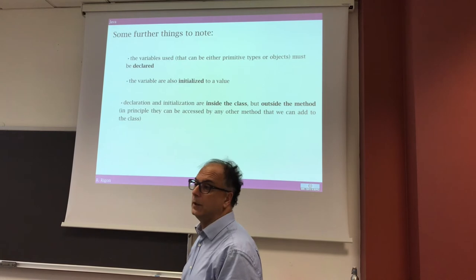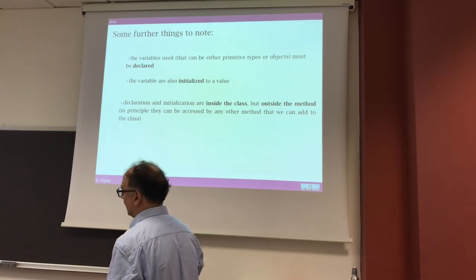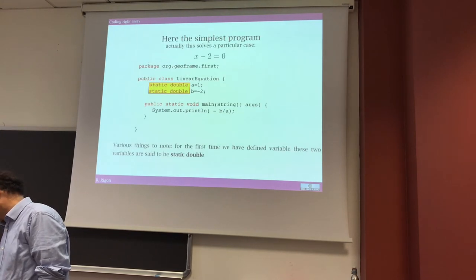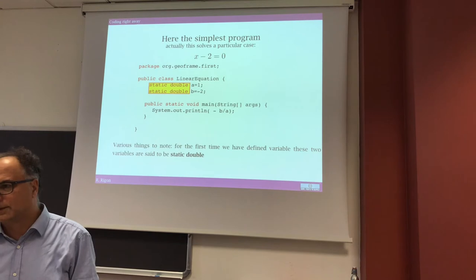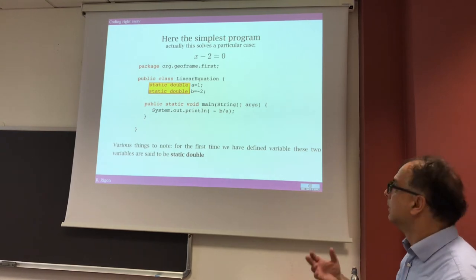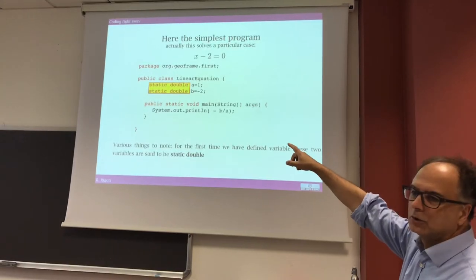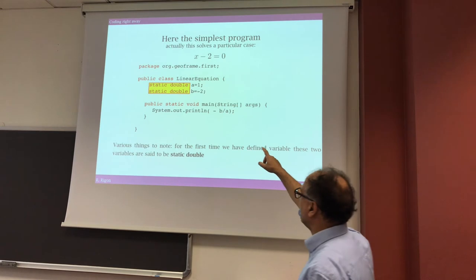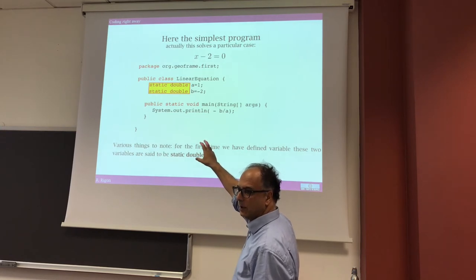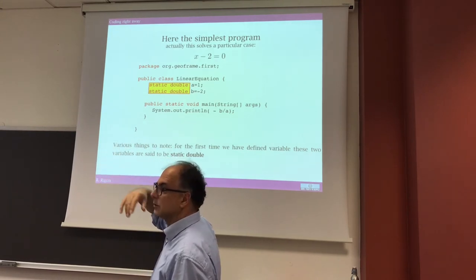Another thing to notice: the variables are declared, their types are declared, and they are initialized. This program is very simple but there are many things inside that we normally take for granted. Assigning a = 1 means we assign a value, and we also define which type we have. Java is a strongly typed language — not like Python, for instance, where the language carries all of that itself.